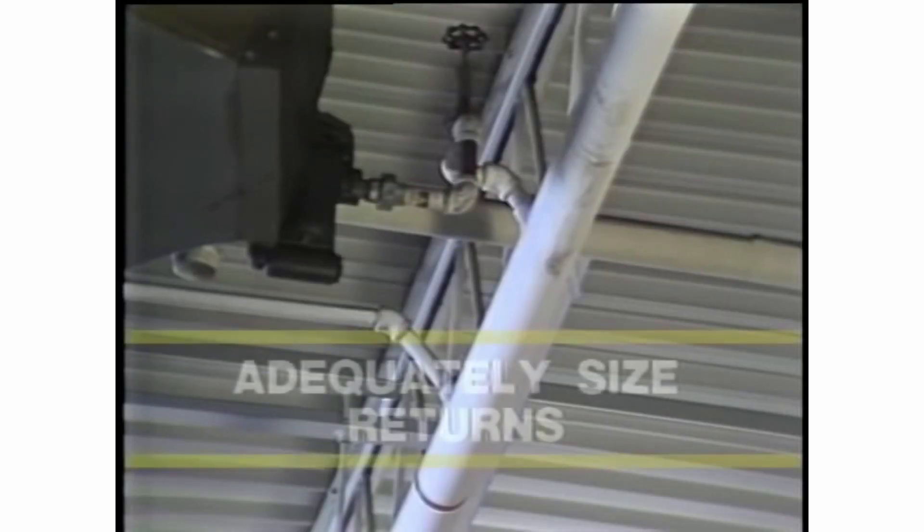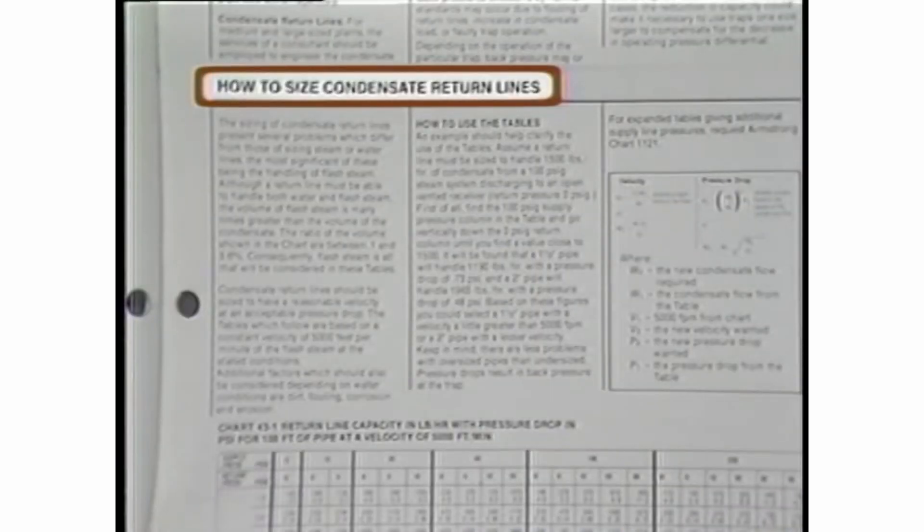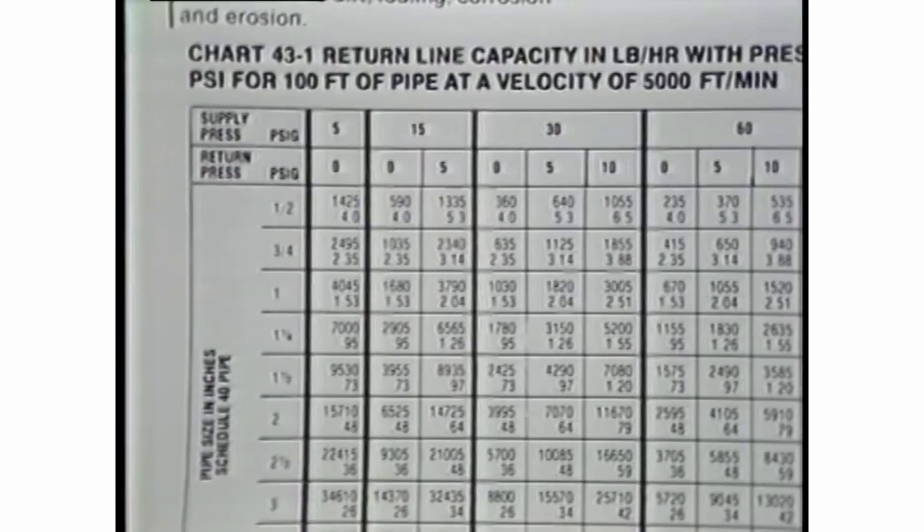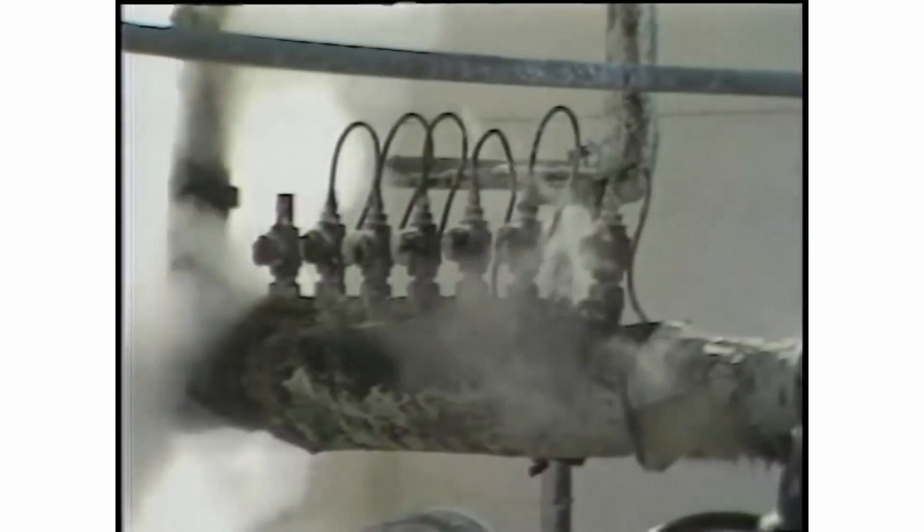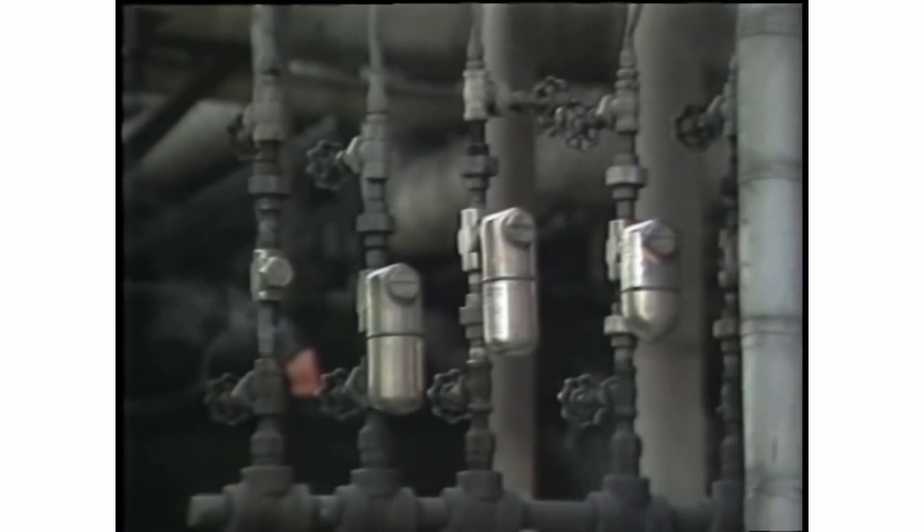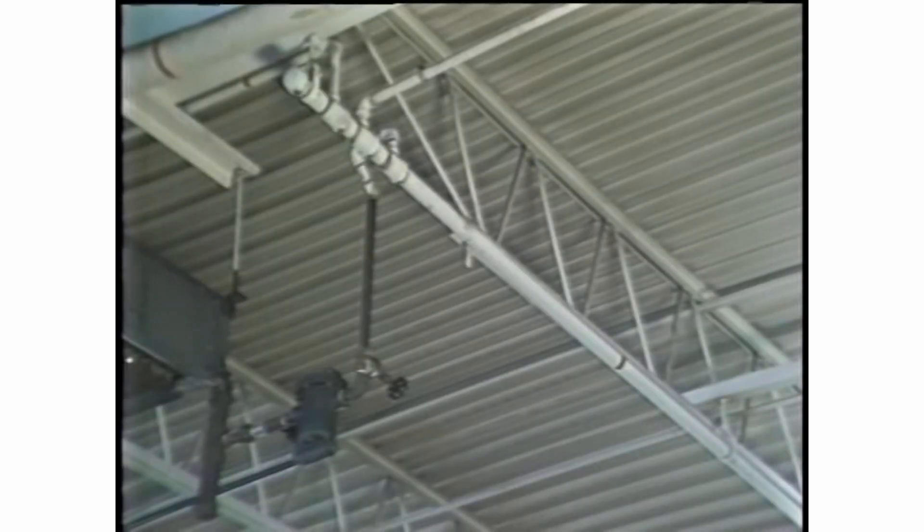Return lines must be adequately sized. Hot condensate discharging into the lower pressure of the return line produces flash steam. Return lines must be sized to handle this mixture of condensate and steam. If return lines are too small, high back pressures and excessive velocities will result. Excessive back pressure affects the operation of thermodynamic traps and reduces the differential pressure across all types of traps, thus reducing their capacity. High velocities in return lines increase the likelihood of differential shock and erosion.